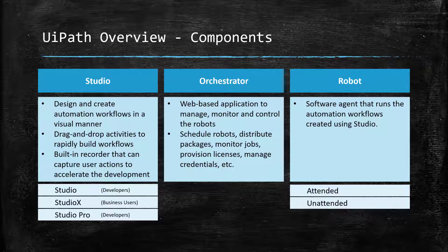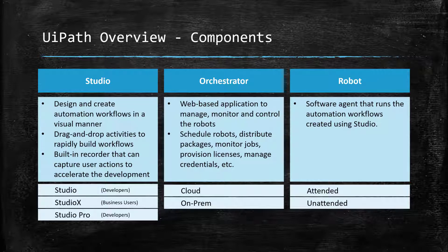The Orchestrator also comes in two versions: on-premise and Automation Cloud. With the on-premise version, you can install the Orchestrator wherever you like — it could be a server running in your data center or any cloud platform like Azure, AWS, or Google Cloud. The Automation Cloud version is UiPath's cloud-based software-as-a-service, which is basically an Orchestrator hosted by UiPath in their own cloud. The biggest advantage is that you don't have to worry about the infrastructure — just sign up and start using it immediately. In a nutshell, UiPath is a client-server architecture application where the Orchestrator is the server and Studio and Robot are clients.